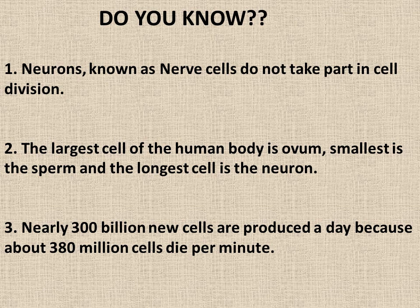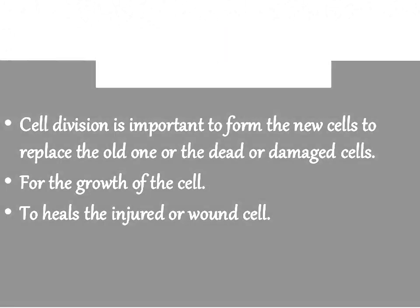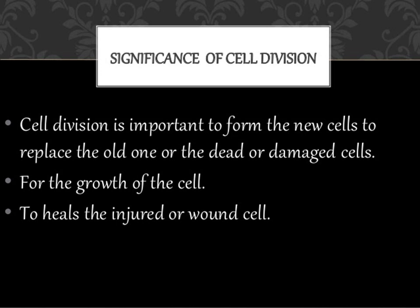Number two: the largest cell of the human body is the ovum, the smallest is the sperm, and the longest is the neuron. Number three: nearly 300 billion new cells are produced per day, because about 380 million cells die per minute.